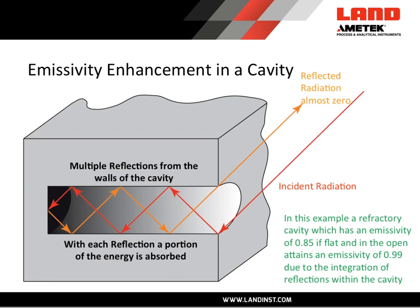Another way to raise the emissivity of a material is to change its shape. This is how people make black body calibration sources — they take a material like silicon carbide, which may have an emissivity value of 0.85, then produce a cavity within it of at least six diameters depth relative to the cavity diameter. The multiple internal reflections that occur within that cavity integrate together to give an emissivity value of almost one — in this example 0.99. Manufacturers produce black body calibration sources with emissivities of 0.99 or even 0.995.